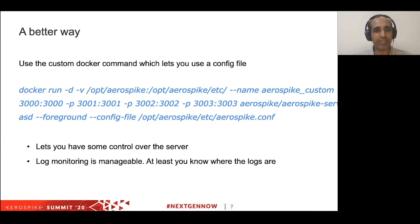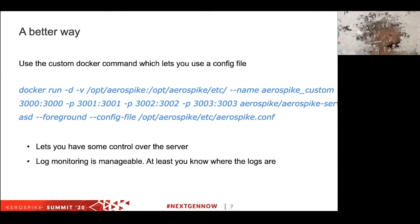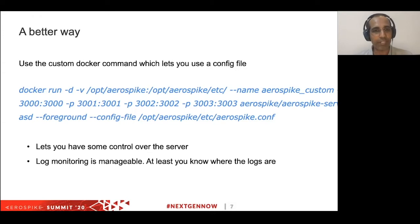We can run a much better Docker command. What this does — I'll run through it in detail — it lets you specify a config file. Because you can use a config file now, you are in control of your database. You can configure where you'll put your log files and pretty much all the Aerospike settings can be configured in this configuration file. This command is similar to the previous one but with a few additions.